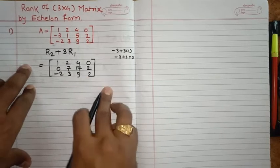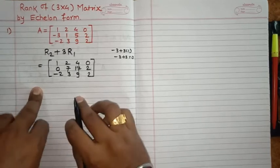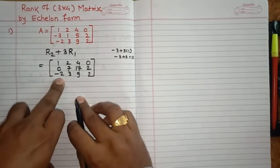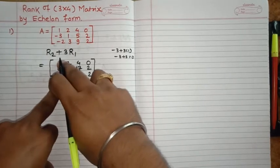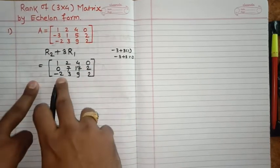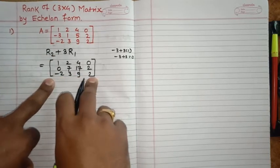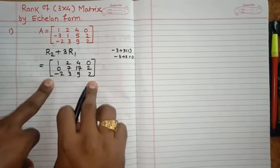Okay, so this is the first step after this elementary operation. Now in the second step, see here, minus 2 is here and 1 is here. If I multiply row 1 by minus 2, then minus 2 here will become plus 2. To make this zero, a transformation is needed here. So let's take